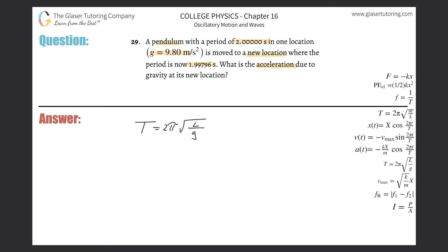So why don't we do that? So the period here is going to be 2, that's equal to 2π, then multiplied by the square root of the length all over g, which is 9.80.